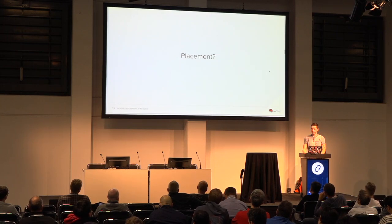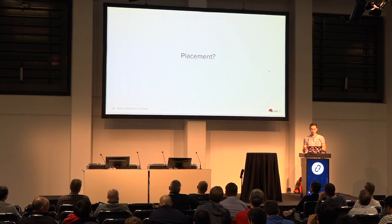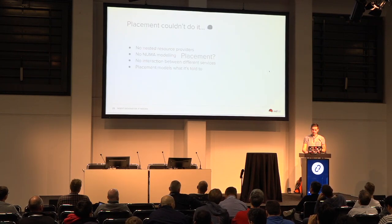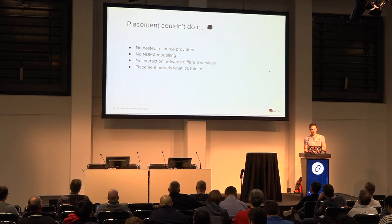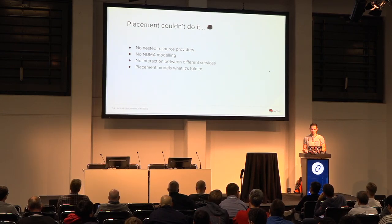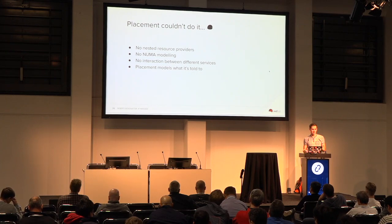Placement seems like the savior for pretty much every problem in the Nova, Cyborg, and Neutron sphere. The problem with Placement was that, at the time we were working on this — and even now — the features that we needed, Placement didn't support them. We could have waited three or four cycles for these features to land in Placement, but a 50% performance hit is quite substantial. We at Red Hat were trying to support custom hacky workarounds that involved restarting services, and we didn't want to do that. So essentially, Placement wasn't a viable solution for us at the time.